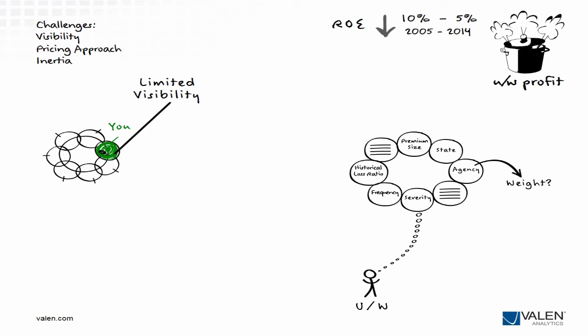Expecting your underwriters to take on today's challenges using yesterday's tools and yesterday's approach to pricing is no longer sustainable. If we're making it difficult for underwriters to incorporate hard data into their decision-making, it's no wonder there's friction between actuaries and underwriters when it comes to price. Valen conducted a large study that showed 77% of actuaries and underwriters are at odds over price. Given the importance of getting the price right when it comes to generating an underwriting profit, this age-old internal battle of wills is no longer tenable. You've got to get your people on the same page when it comes to your pricing approach.